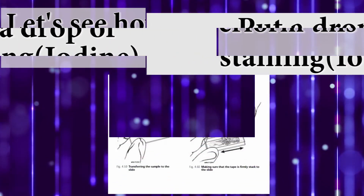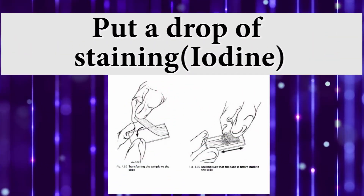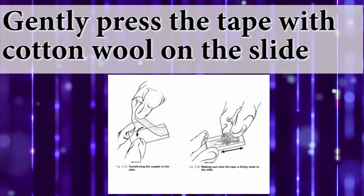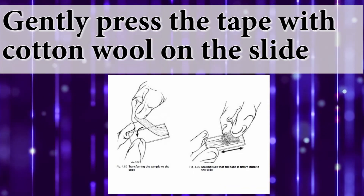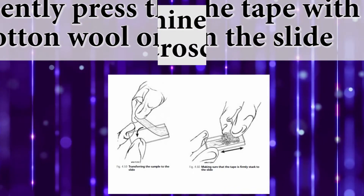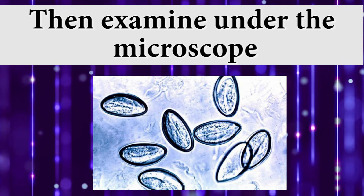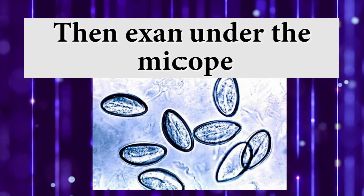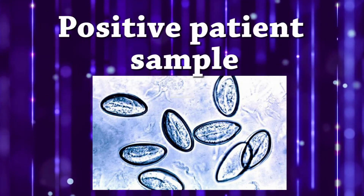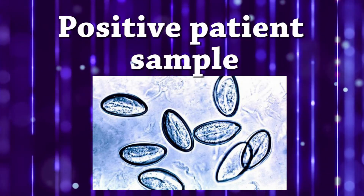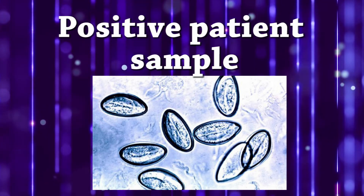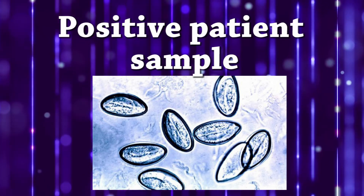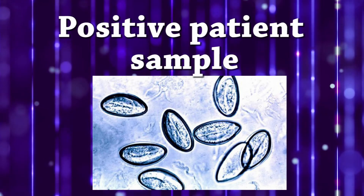Let's see how to perform this test. Put a drop of iodine and gently press the tape with cotton wool onto the slide. Then examine under the microscope. When the patient is positive for pinworm infection, you can see this kind of eggs.